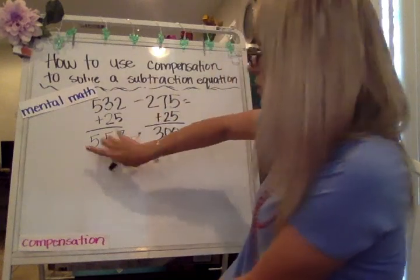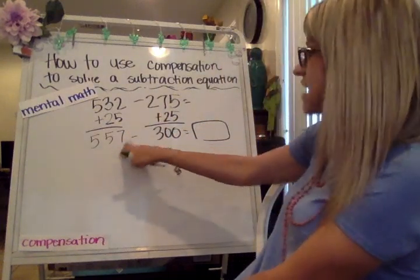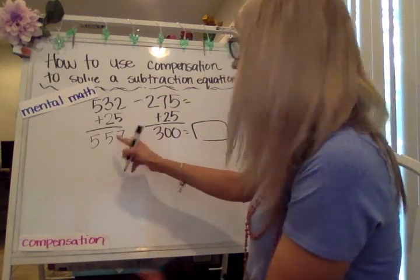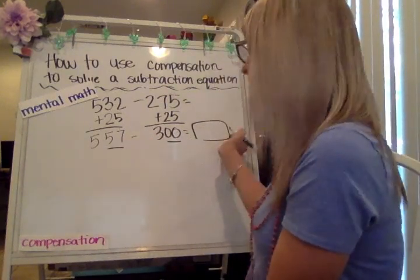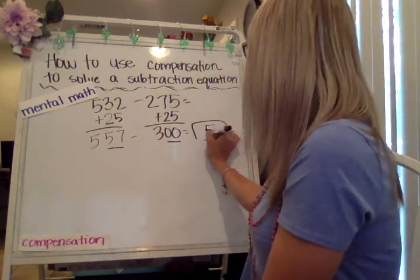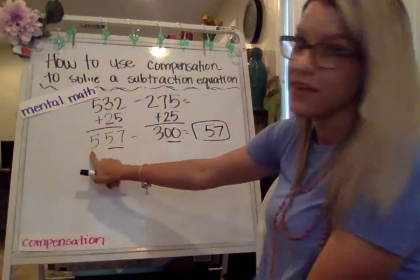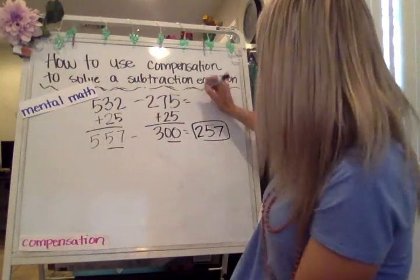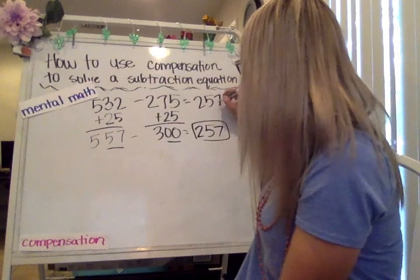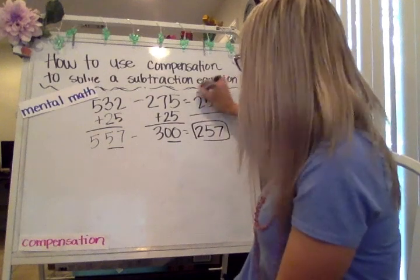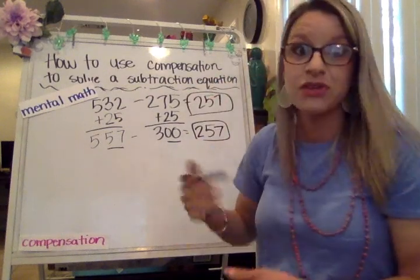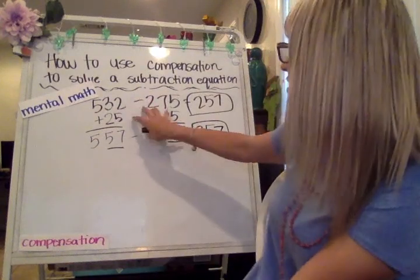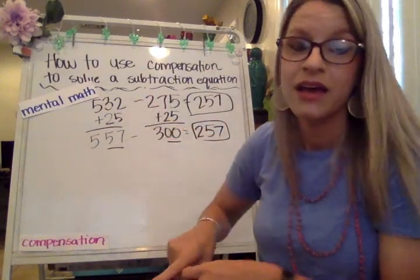So here's our new equation: 557 minus 300. The 57 is not going to change — we keep the 57. Five hundreds minus three hundreds is two. So the difference is 257. You should be getting to the place where you'll start being able to do all of this in your head.